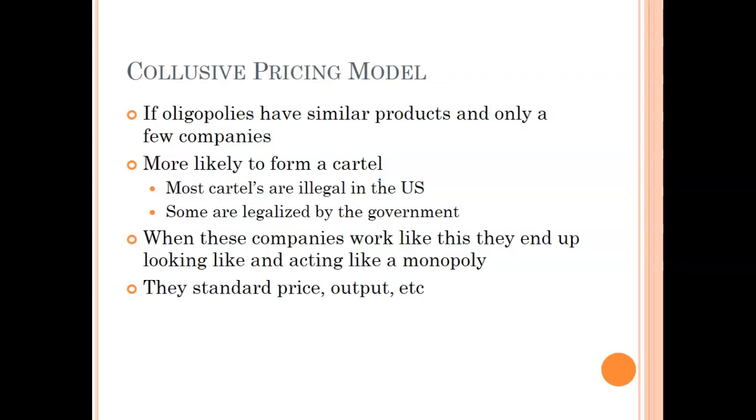How about the second model, the collusive pricing model? Well, if oligopolies have similar products and there's only a few companies, that tight oligopoly, then the businesses are more likely to form a cartel, which is where they have a formal or informal agreement with each other on things like pricing, output, maybe geographical areas. Now, most cartels are illegal in the United States. Some are legalized, and the ones that are legalized are legalized to protect the consumers is the concept. Just like we allow natural monopolies, why? To protect the consumer. Sometimes it's better off to do that, to let companies go out and make agreements with each other.